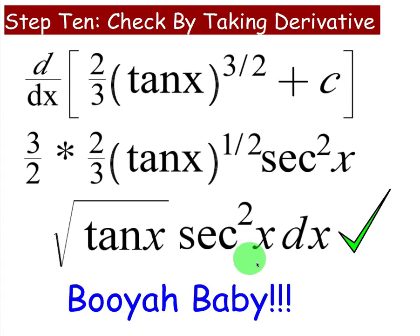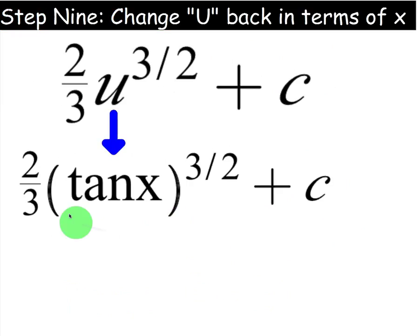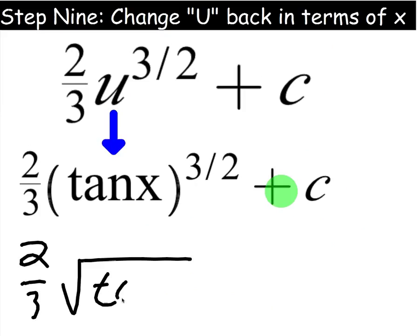So that concludes our lesson, and that lets us know for sure that the antiderivative of our original function is indeed equal to 2 thirds tangent of x to the 3 halves plus c. You could rewrite this, like I said before, as 2 thirds square root of tangent cubed of x.